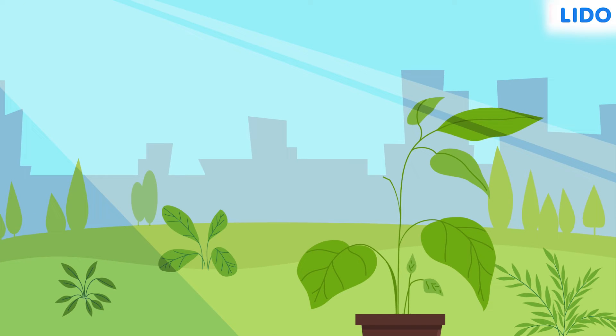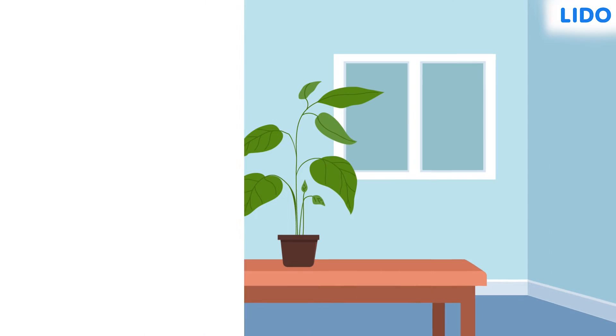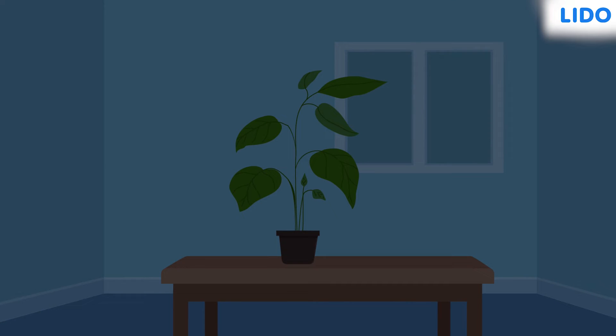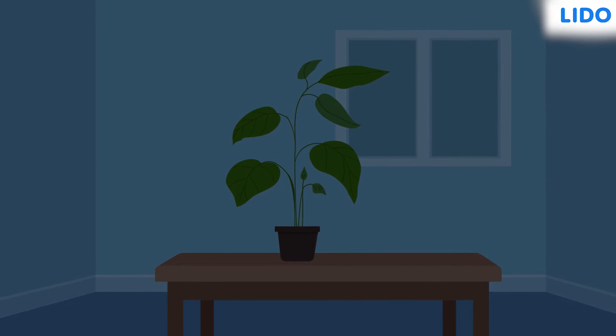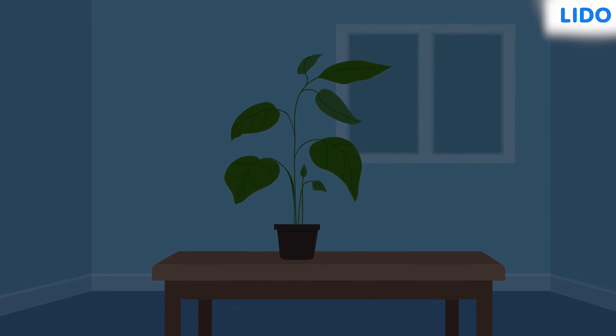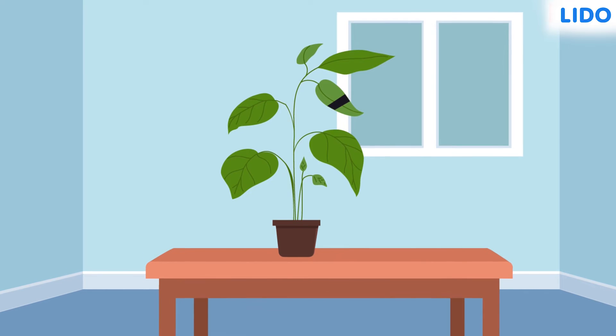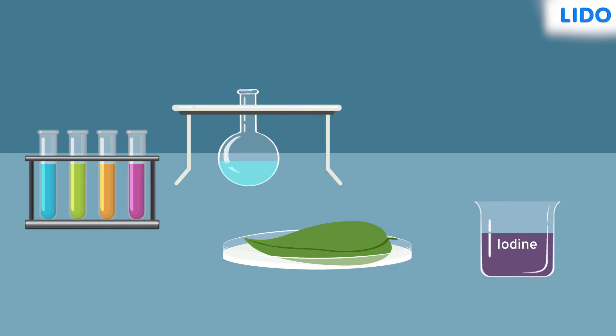Next, Sapna tested if sunlight and chlorophyll were important for photosynthesis to take place. To check if sunlight is necessary for photosynthesis, she took a leaf from a plant that had been kept in the dark for two days. She covered part of the leaf with black paper and placed it under sunlight for some hours.